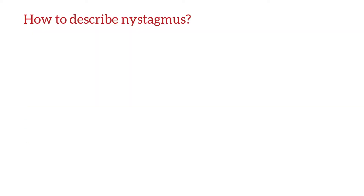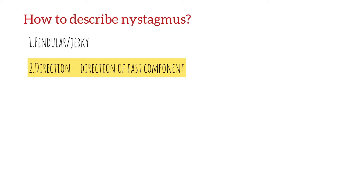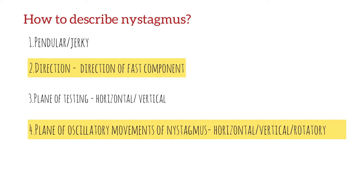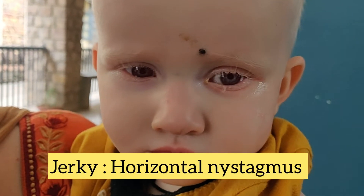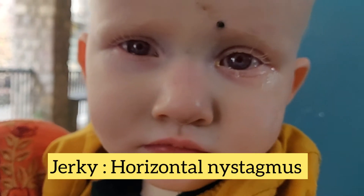We describe nystagmus under the following headings: Is it pendular or jerky? Direction is determined by the direction of the fast component. Plane of testing — is it horizontal or vertical? Plane of oscillatory movements of the nystagmus, which could be horizontal, vertical or rotatory. And grading of nystagmus. Here is a patient who has jerky nystagmus in the horizontal plane.